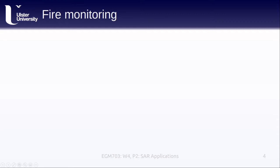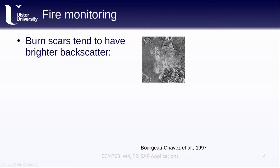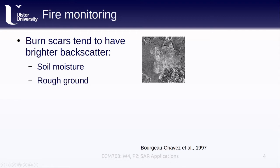In somewhat the opposite direction of flooding, burn scars tend to have a higher or brighter backscatter than the surrounding areas. The example here shows a burn scar from a fire near Toke, Alaska. We can see that the unburned forest on the left and right sides of the images appears sort of gray, while the burn scar shows up very prominently and brightly in the center. This happens in part because of a difference in soil moisture between burned and unburned areas. After the fire, we tend to see higher soil moisture due to the loss of vegetation such as sphagnum moss, but also the exposure of more rough areas.